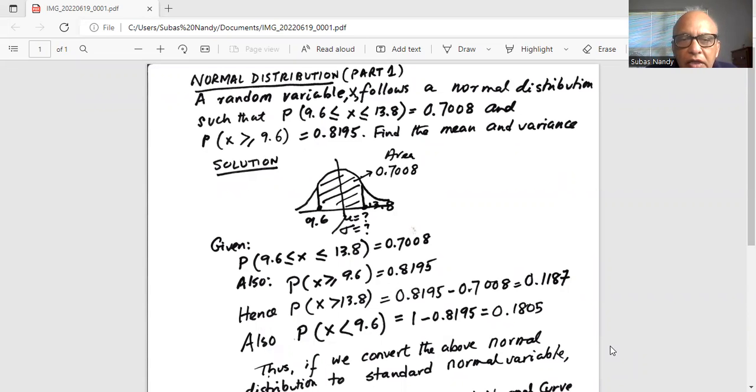I indicate the problem with the bell-shaped normal distribution. At the center on the horizontal axis is μ, which we do not know. We also do not know σ, the standard deviation. But we know the area under the normal curve between 9.6 and 13.8 is 0.7008.